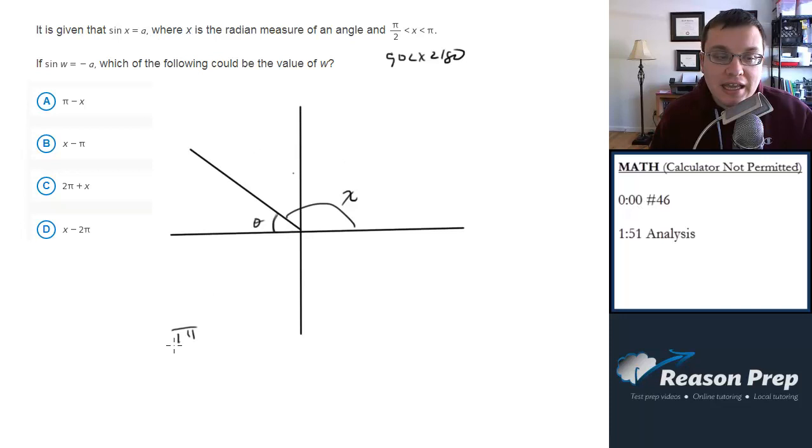So where is sine negative? Well, it's positive in 1 and 2, so it's negative in 3 and in 4. So when I look at my choices, I want to find an angle that's in one of these quadrants, and if I can, I'm good.